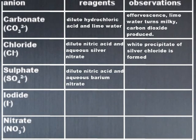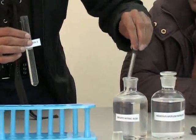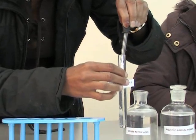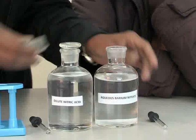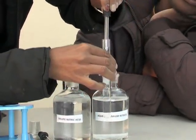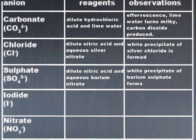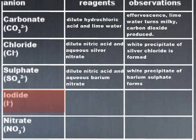Next to test is sulfate. To test for sulfate, we again need to add dilute nitric acid, but this time we add a few drops of aqueous barium nitrate. To the solution labeled unknown, we add a few drops of dilute nitric acid with the medicine dropper, and then we add aqueous barium nitrate with another medicine dropper. A white precipitate is formed again. This time it is the precipitate of barium sulfate, which proves that the unknown solution contains the sulfate ion.